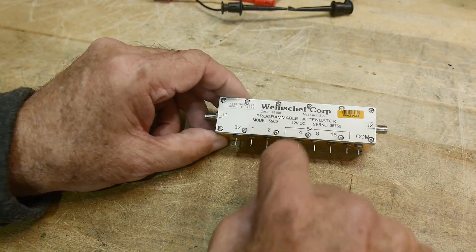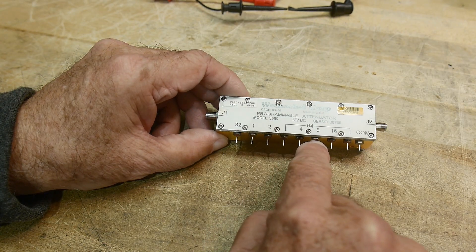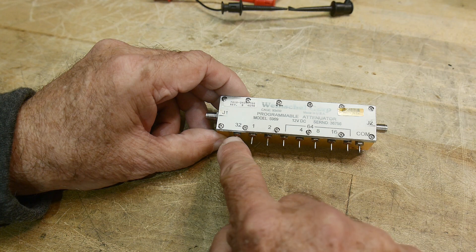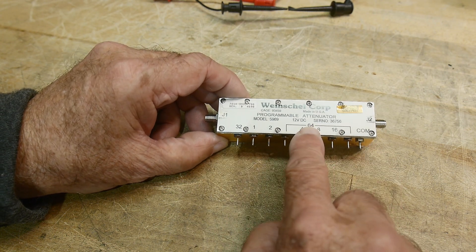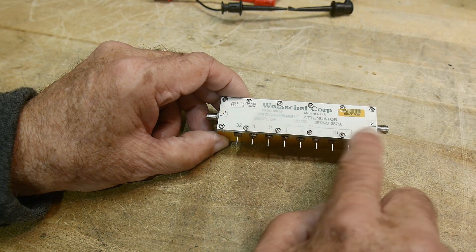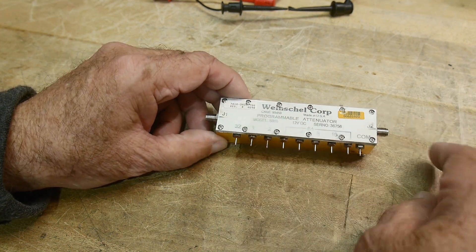So it goes from it has a 1 dB, 2 dB step, 4 dB, 8, 16, 32, and then if you energize these two pins together it gives you 64, and then all together it'll give you 127 dB of attenuation. So it is a really nice one.